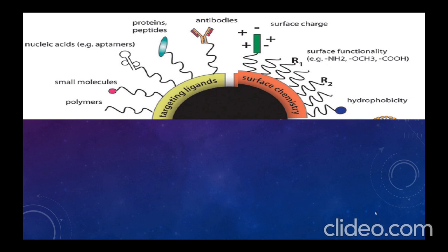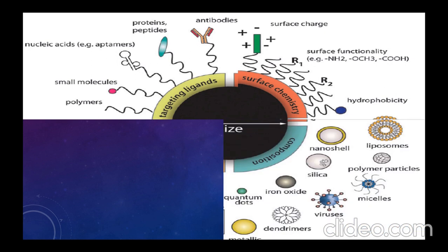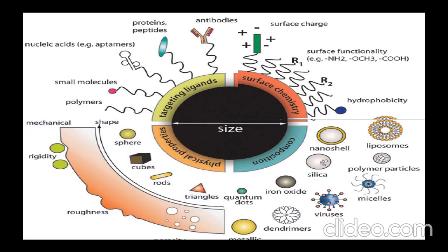In terms of composition, nanoparticles may be composed of different materials like quantum dots, metallic particles, dendrimers, viruses, micelles, polymer particles, liposomes, nanoshells, silica, or iron oxides. Physical properties of nanoparticles may also vary — including shape (spherical, cubical, triangular, and rod-shaped), porosity, roughness, rigidity, and mechanical strength.